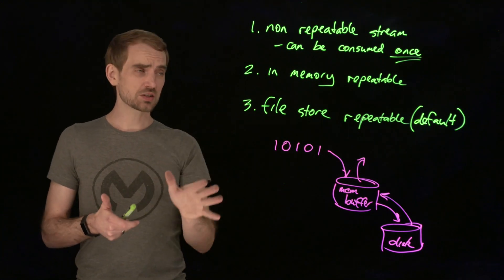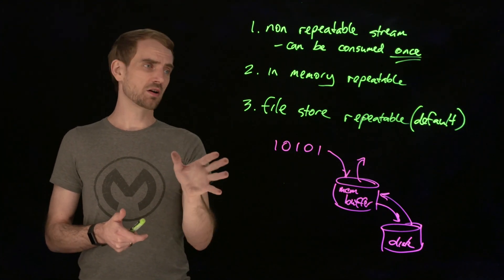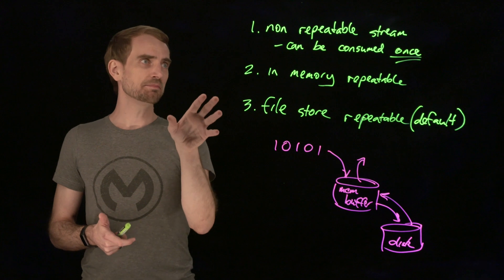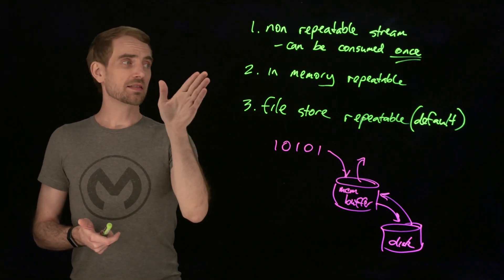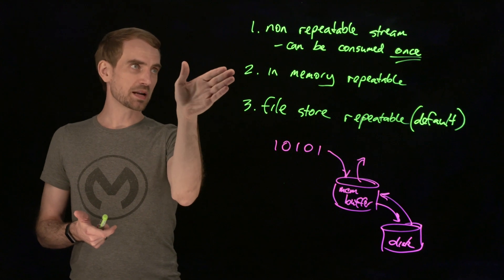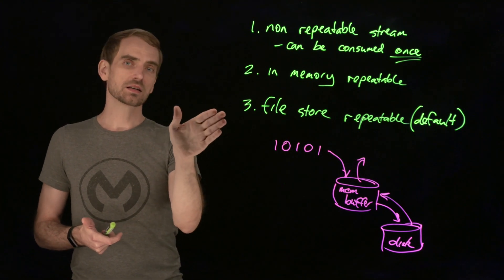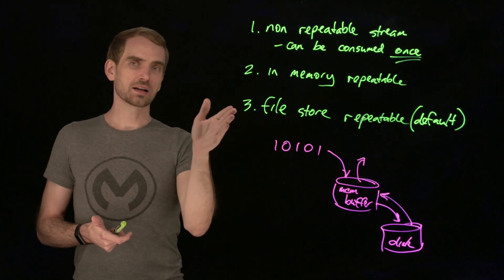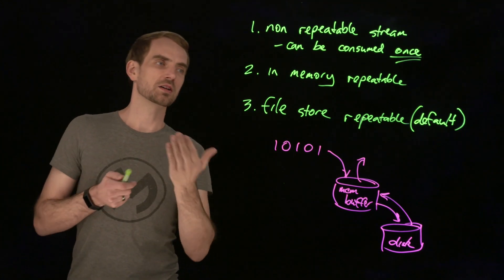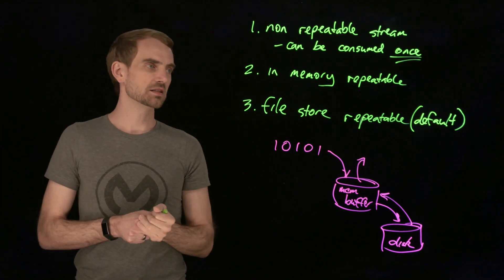So these three options give you a range of tunability, ranging from best performance would be the non-repeatable stream. The in-memory repeatable would be better performance than going to disk, but disk is the safest and that's why it's the default. So it can deal with very large files, gets that good mix of a certain amount in memory, certain amount on disk.